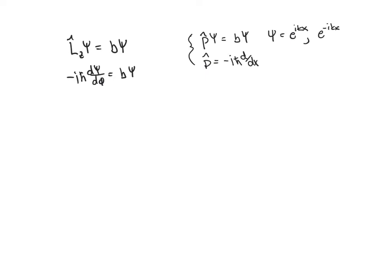Keeping in mind that we've already solved this problem, we know what these wave functions should look like. Now our variable is phi, not x, and so we can write this as psi of phi equal to e to the plus or minus ik phi, where k in this case is just equal to b over h-bar.